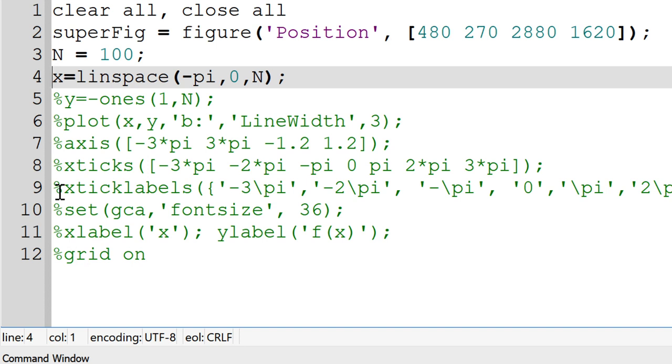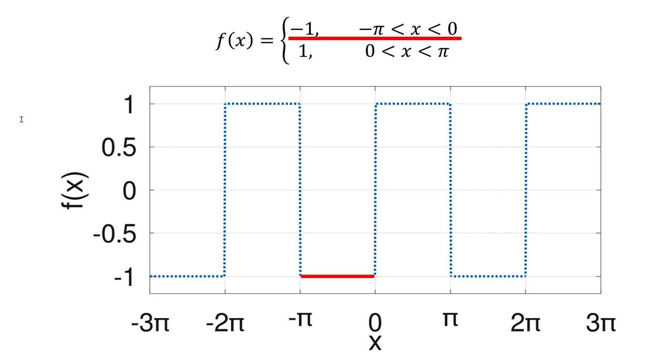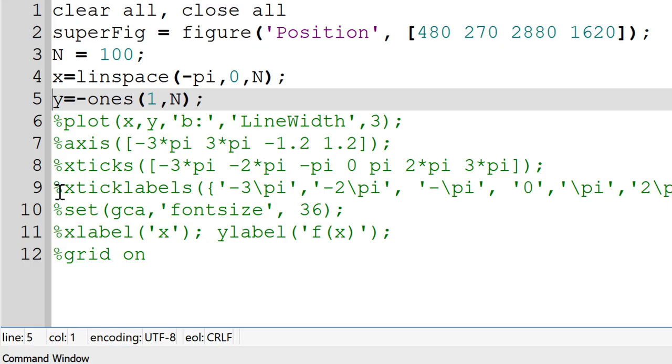Next, I will define a variable y for y coordinate of fx. Since fx equals minus 1 at minus pi to 0, we will use a built-in function ones as minus ones 1 comma n. Ones will generate 1 by n vector having the elements of 1s, and minus ones 1 comma n will generate a size 1 by n vector having elements of minus 1.